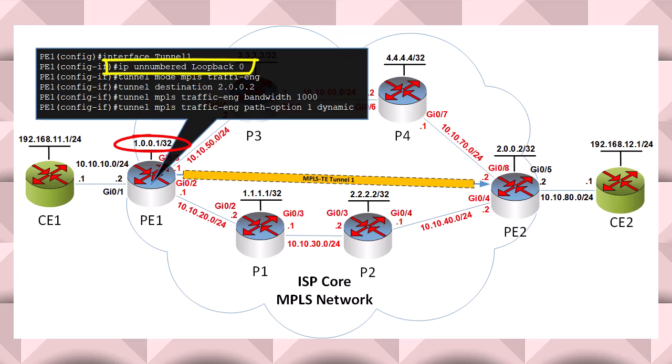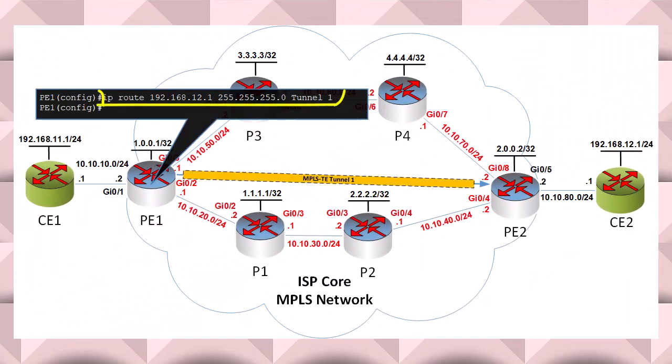So now we're ready to statically route traffic from PE1 to the loopback of CE2. We can apply this static routing command. That's it — it's a simple static route with an exit interface of the specific tunnel. Once you have the underlying infrastructure, that's all you need.